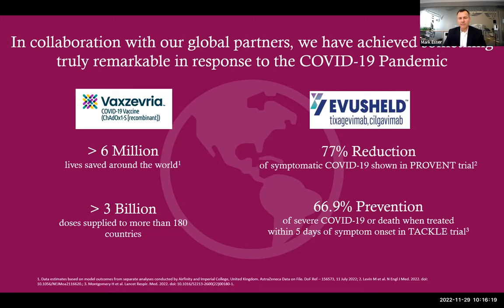I led the Evusheld program in addition to supporting the vaccine program. At a high level, we showed about a 77% reduction of symptomatic COVID in the key phase three prevention trial, and about 67% in preventing severe COVID or death when treated within five days of symptom onset in our outpatient treatment study. Those are the two numbers to anchor on as we go through the presentation.